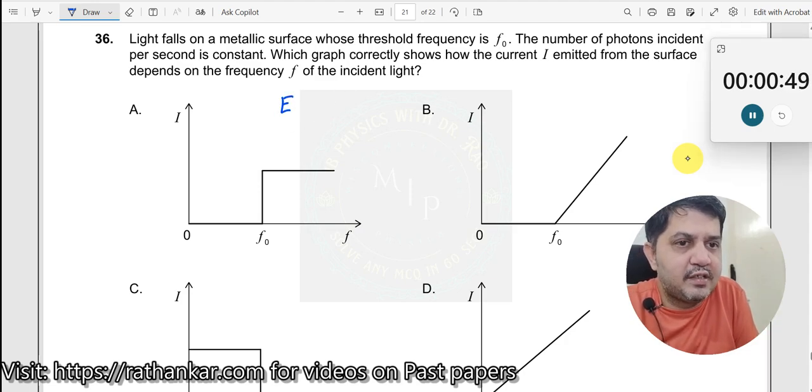The moment you say photoelectric effect, just write Ek equals HF minus phi 0. Phi 0 is the work function. HF is the frequency of the photon or energy of the photon. Ek is the kinetic energy of the electron. Number of photons incident per second is constant.